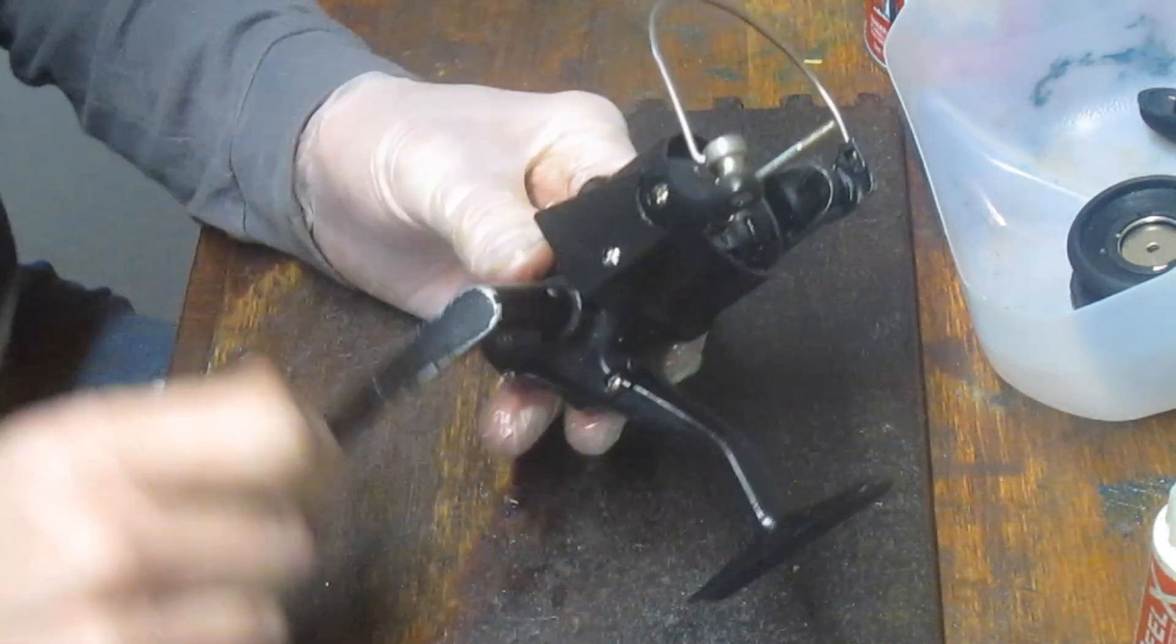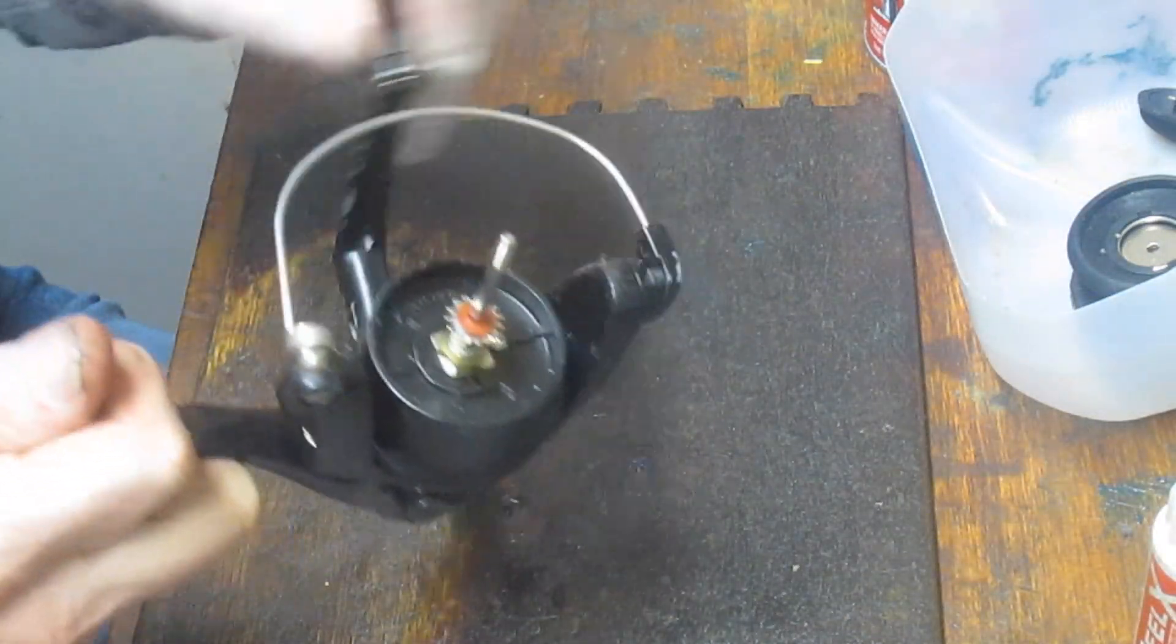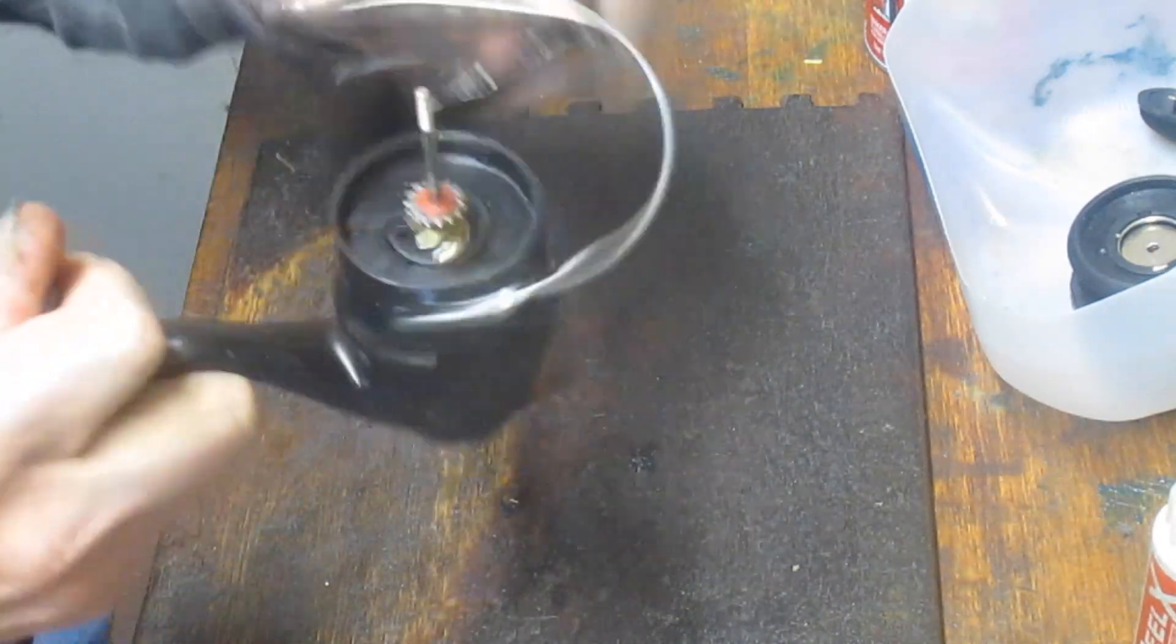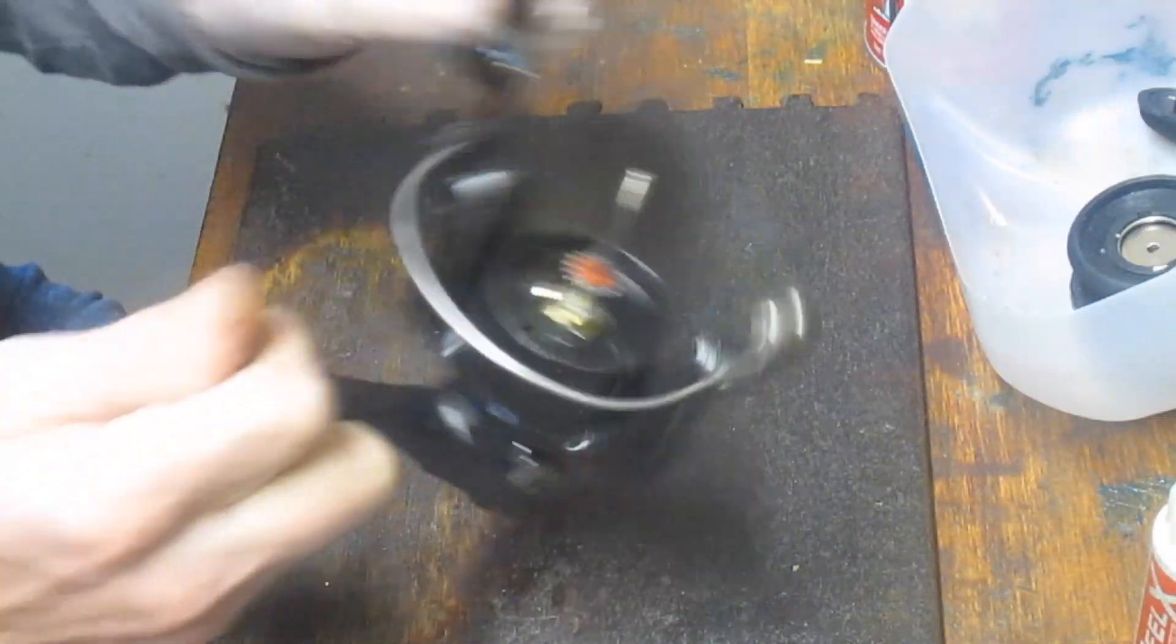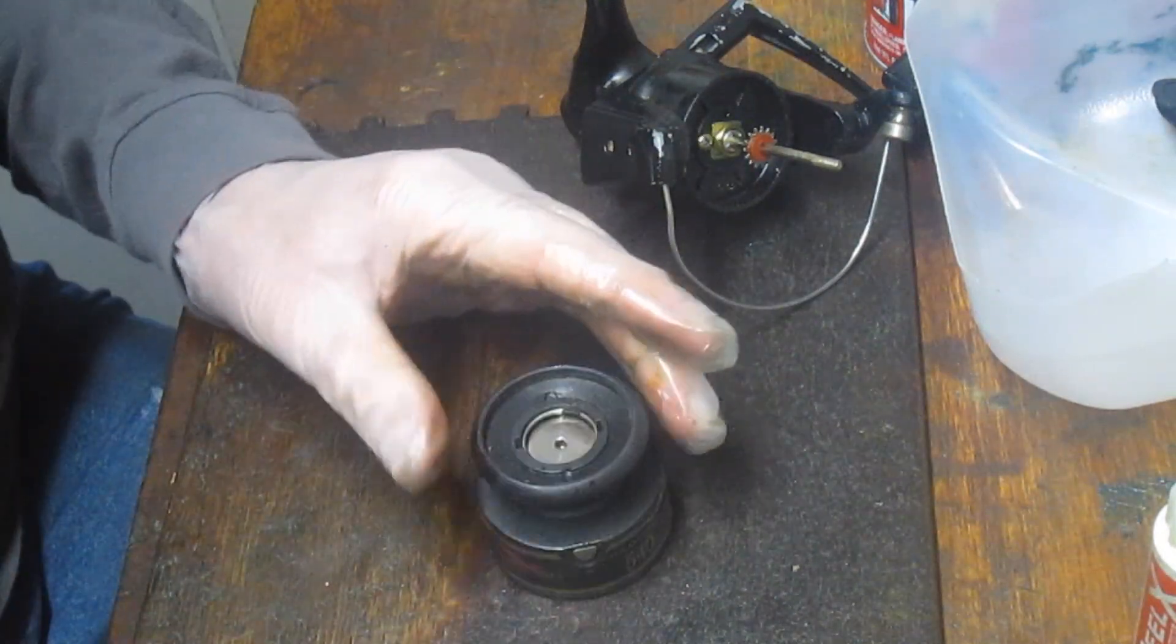It's a nice versatile reel. So now we'll put that handle in. We'll make sure everything's working. Oh yeah, it turns a lot easier. And we have that anti-reverse. We want to make sure we have the anti-reverse in place, which we do. It's not an infinite anti-reverse. It's a lever-driven one. So let's just go finish this project then by doing the spool up top here.